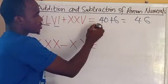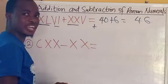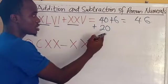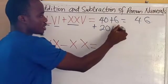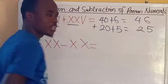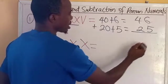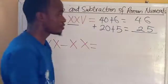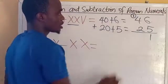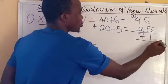Now plus, the second one is XXV. This XX is 20 because X is 10 plus 10, we have 20. And V is 5, we have 5. Now we can see that this is 25. Don't forget that we are adding the two together. Now 6 plus 5, that is going to be 11. Then we write 1, we keep 1 here. 4 plus 2, we have 6 plus 1, we have 71.